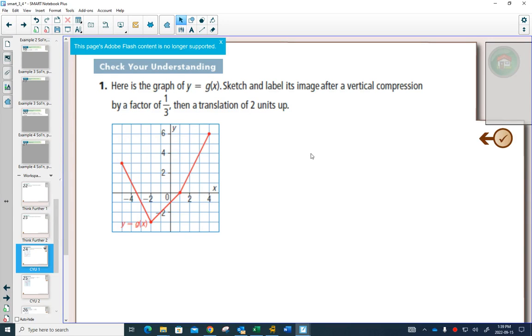So here's the graph of g of x. There's four key points on this graph. We want to have a vertical compression by a factor of one-third and a translation of two units up.